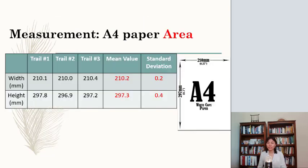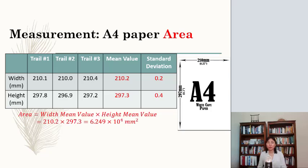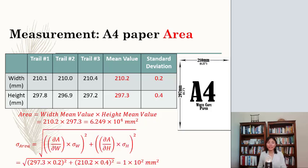For instance, our example. First we find out the area. We have width and height mean values and they all have four significant figures. So our answer should have four significant figures. And then we calculate the standard deviation. We take partial derivatives of width and height and multiply corresponding standard deviation and square them. And then we find out the standard deviation of area. That's 1 times 10 to the 2 millimeters squared.